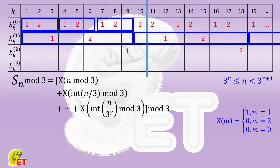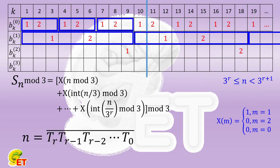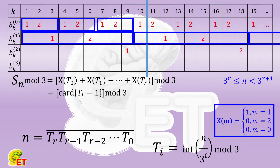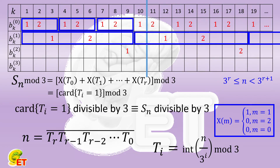Recalling how to write n as a ternary number: the i-th digit is the remainder of floor(n / 3^i) divided by 3. Now it is clear — each item in the formula is x evaluated at the corresponding ternary digit. Since x(m) equals 1 only when the digit is 1 and 0 otherwise, the total equals the remainder of the count of ternary digits equal to 1, divided by 3. So we conclude: the amount of digits equal to 1 in the ternary representation being divisible by 3 is equivalent to S(n) being divisible by 3.